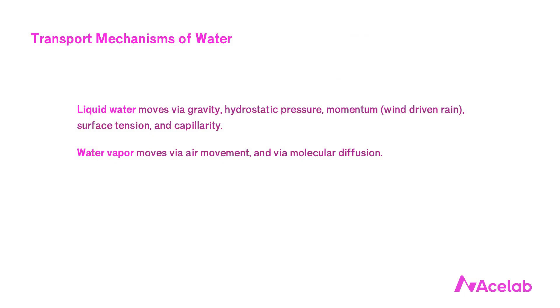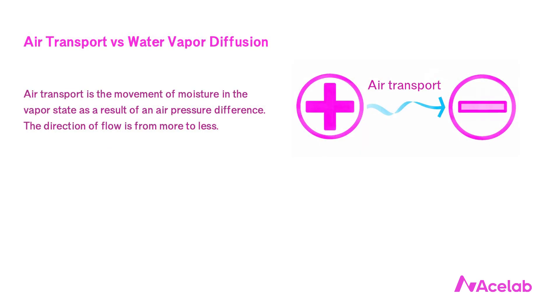Before we continue, it will help us to understand how water gets from one place to another in our buildings. Liquid water moves via gravity, hydrostatic pressure, momentum, surface tension, and capillarity. But liquid water isn't our subject today. Water vapor moves via air movement and via molecular diffusion. We know intuitively that there's water vapor in the air and it makes sense that when air moves, the water in the air moves with it. Air moves due to pressure differences — from higher pressure to lower pressure.